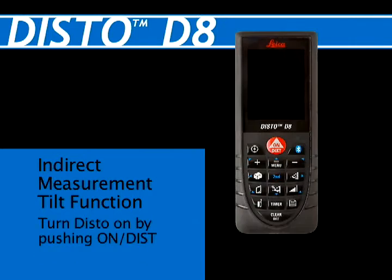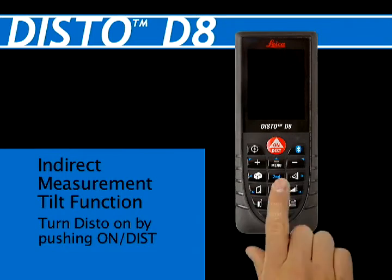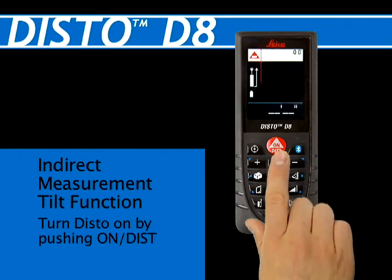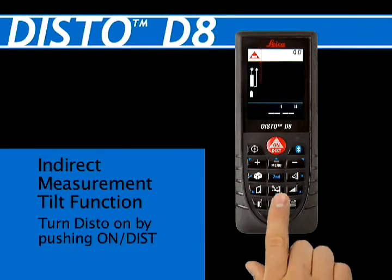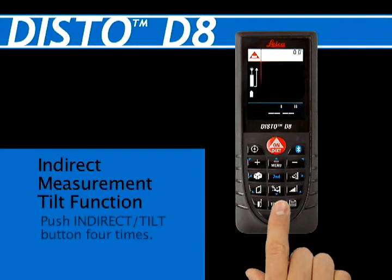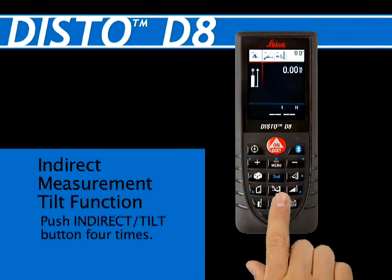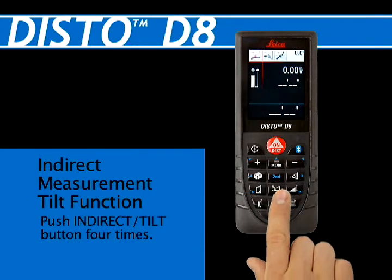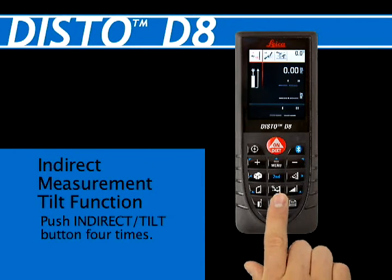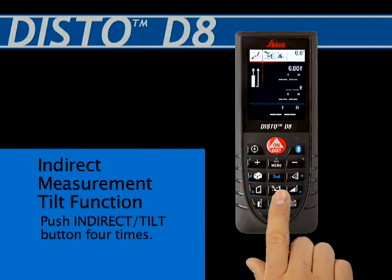Turn the Disto unit on by pushing the red button at top center of the keypad. Push the indirect tilt sensor button four times — fourth button down and center — to select double tilt measurement with two measures.